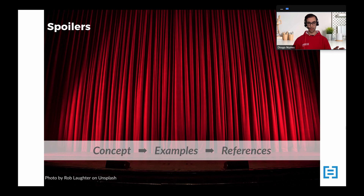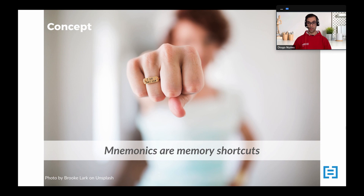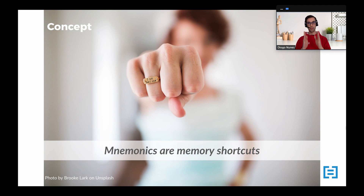Let's start with the definition of what a mnemonic is. A mnemonic is basically a memory shortcut because it helps you retrieve some kind of information without requiring as much effort. The way it works is you take the whole information that you want to remember, and then you reduce it into some kind of trigger words, and that's the word or tip that you use to recall the rest of the information. That's why we say it's a shortcut.